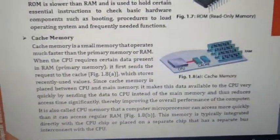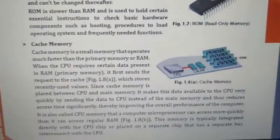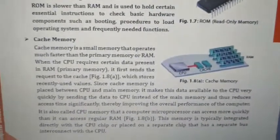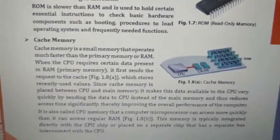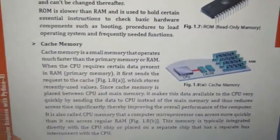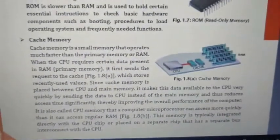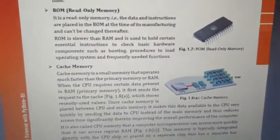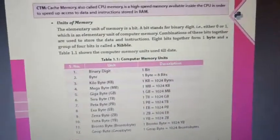The CPU first checks the cache, which stores recently used values. Since cache memory is placed between the CPU and the main memory, it makes data available to the CPU very quickly by sending data to the CPU instead of going to main memory, thus reducing access time. Therefore, cache memory improves overall performance.